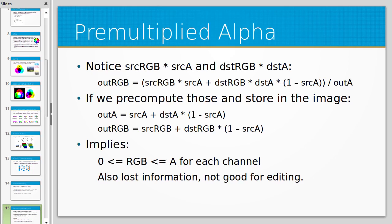One important point: you actually lose some information with pre-multiplied alpha. If you have 50% alpha, you've scaled all your red, green, and blue values down, losing a bit from every one of those values. So this is lossy — but it does save you computation time.